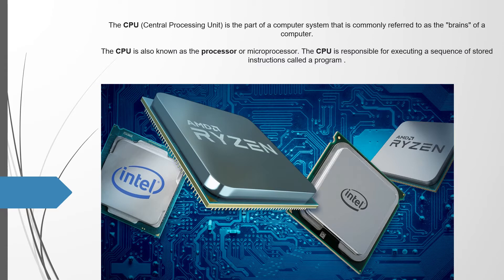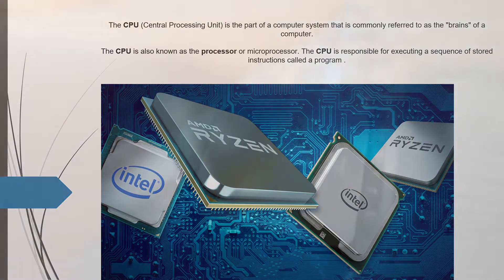The CPU is also known as the processor or microprocessor. The CPU is responsible for executing a sequence of stored instructions called a program. Now the reason why I'm teaching you what a CPU is is because without knowing what a CPU does or is, we cannot go into binary.